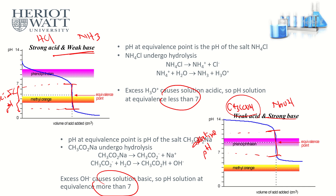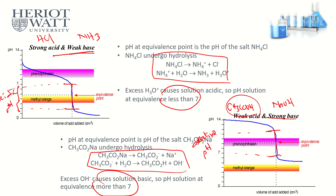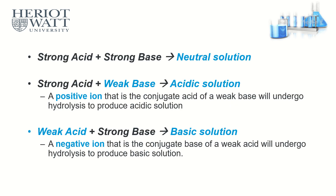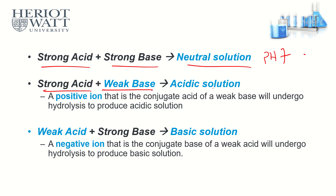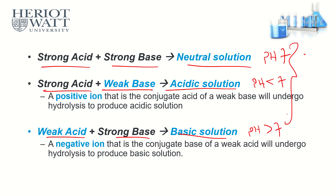In summary: strong acid + strong base → neutral solution, pH 7 at equivalence point. Strong acid + weak base → acidic solution, pH less than 7. Weak acid + strong base → basic solution, pH more than 7. These are the equivalence points for different acid-base reactions.